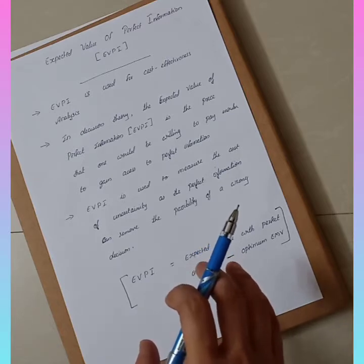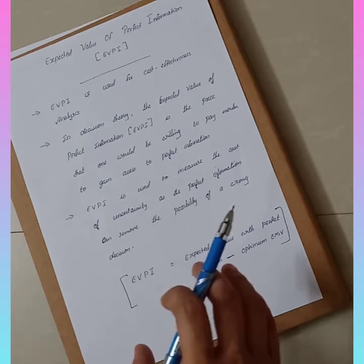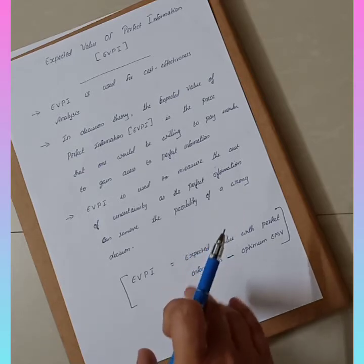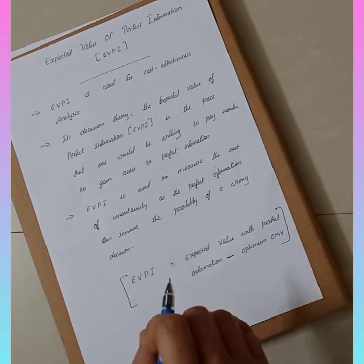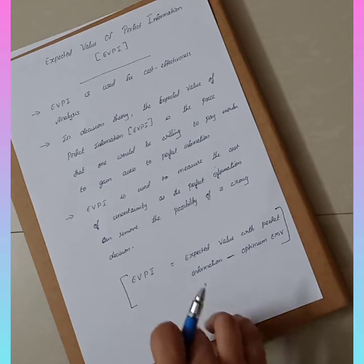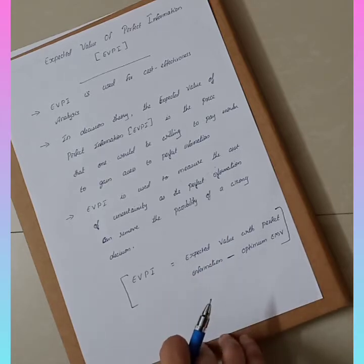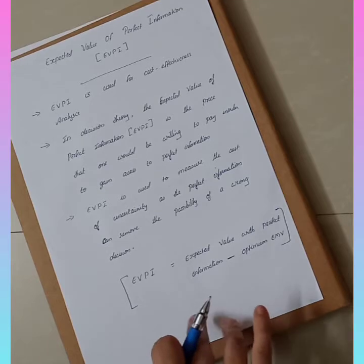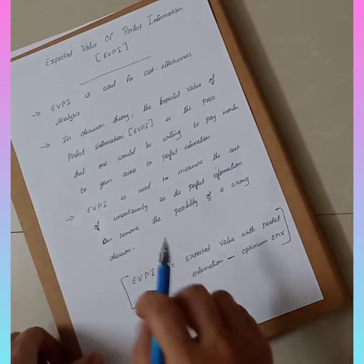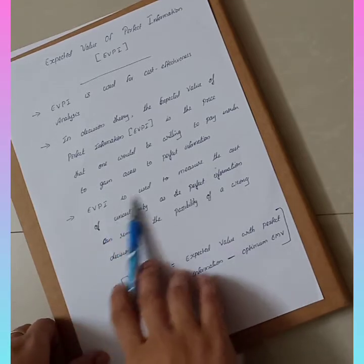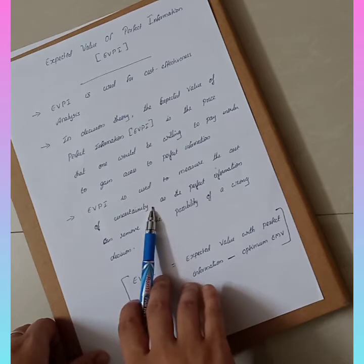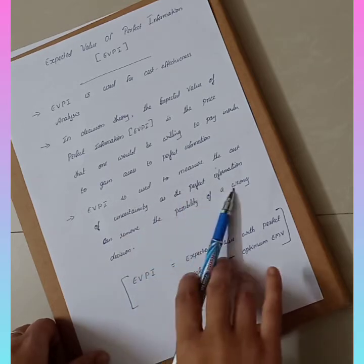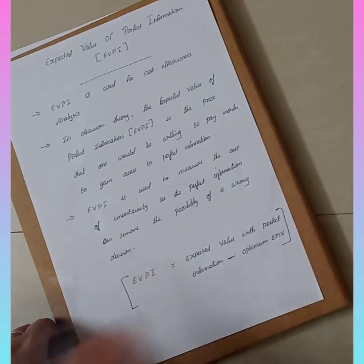When you are paying for something, how much correct information are you getting? We need correct information because in an uncertain or risky situation, this correct information will fetch you the best solution. That is why we say EVPI is used to measure the cost of uncertainty, as perfect information can remove the possibility of a wrong decision.